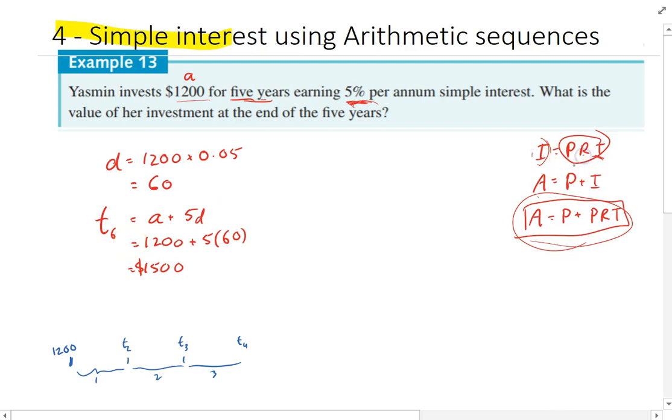I equals PRT is principal times the interest rate. And if you look here, that's the principal times the interest rate right there. And then once I've got the common difference, I multiply it by 5, which is the time. So I actually do PRT just in two different stages, P times R and then T here.